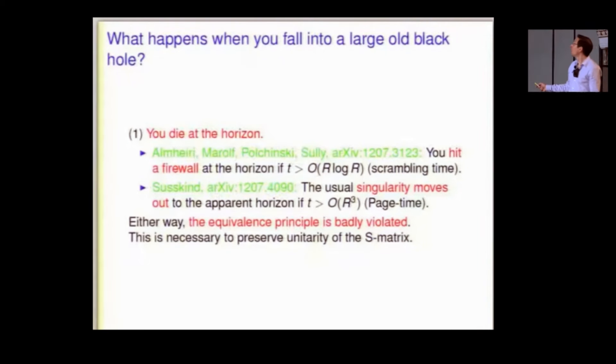I'm going to call these people AMPS. So AMPS think that it only has to be as old as R log R, where R is the Schwarzschild radius in Planck units. Everything will be in Planck units. Lenny thinks that it's the Page timescale, the timescale for half of the black hole to evaporate, which is the same order of magnitude as all of it to evaporate, and order R cubed in Planck units.